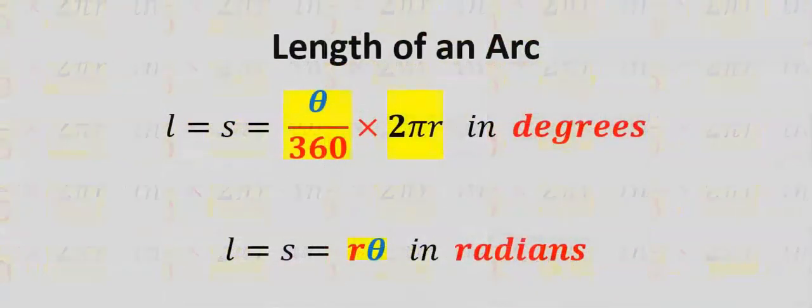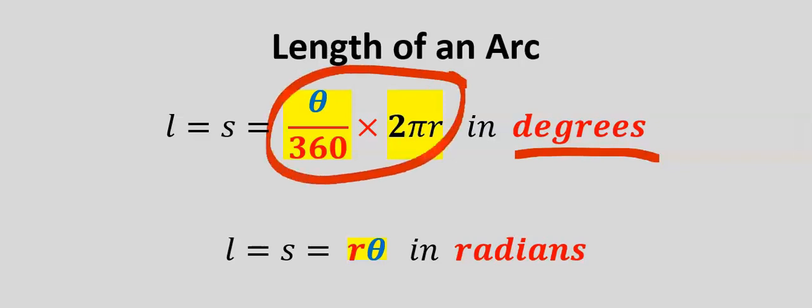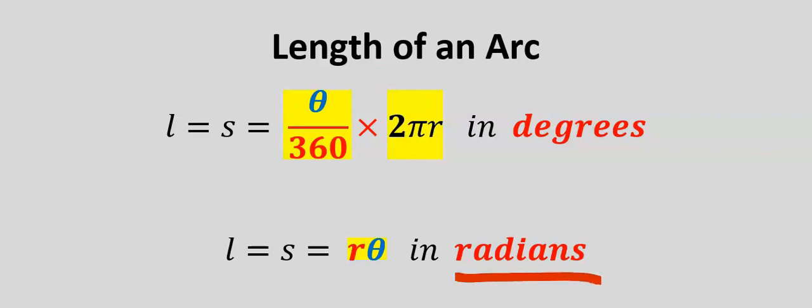Let's consider how to calculate the length of an arc. If the central angle is in degrees, then we're going to use this formula. But if the central angle is in radians, then we're going to use this formula.